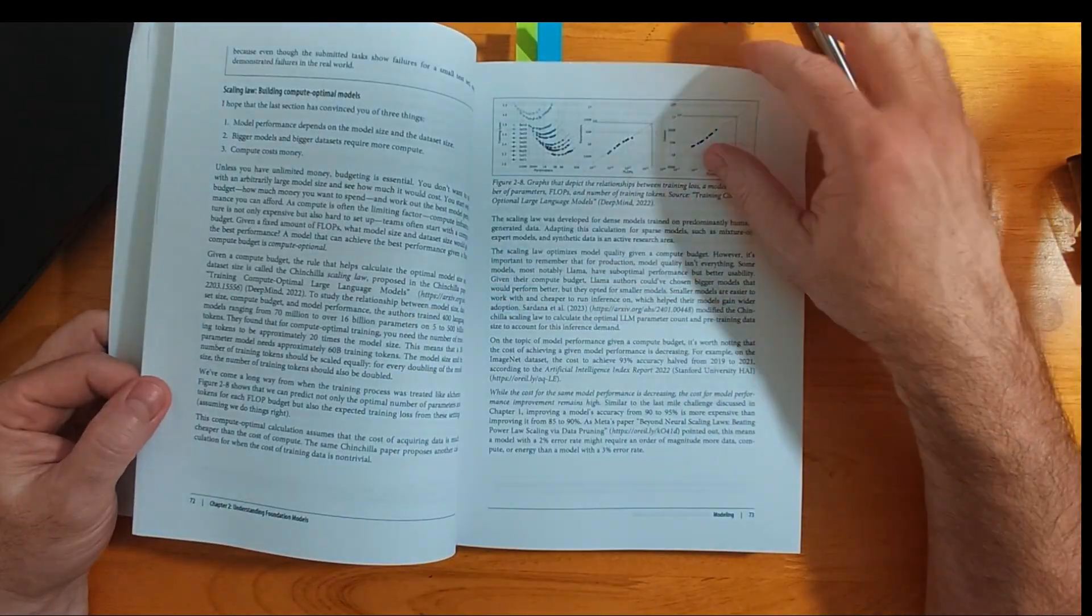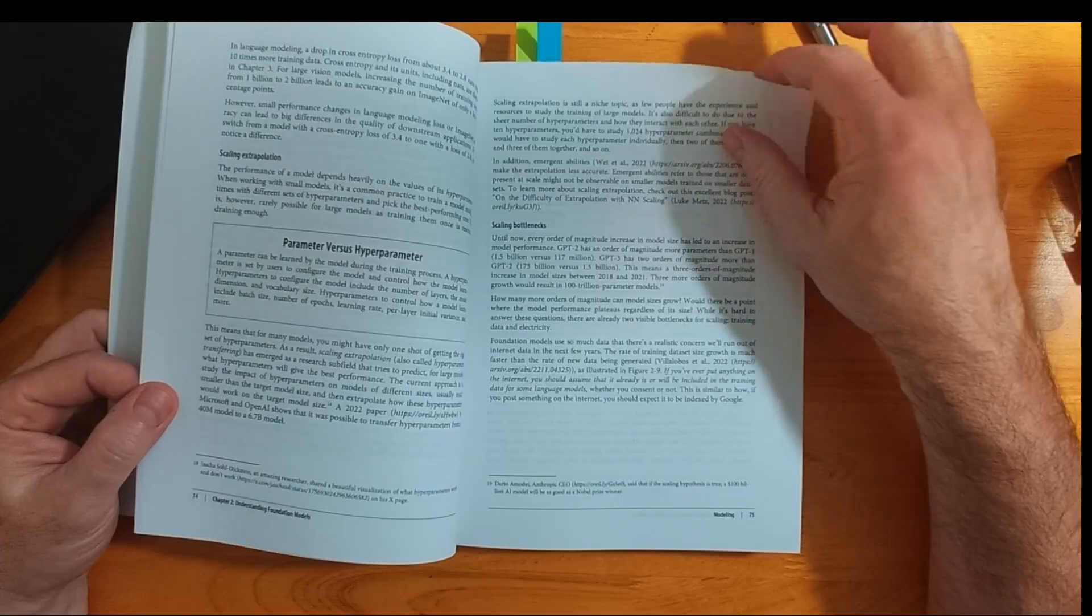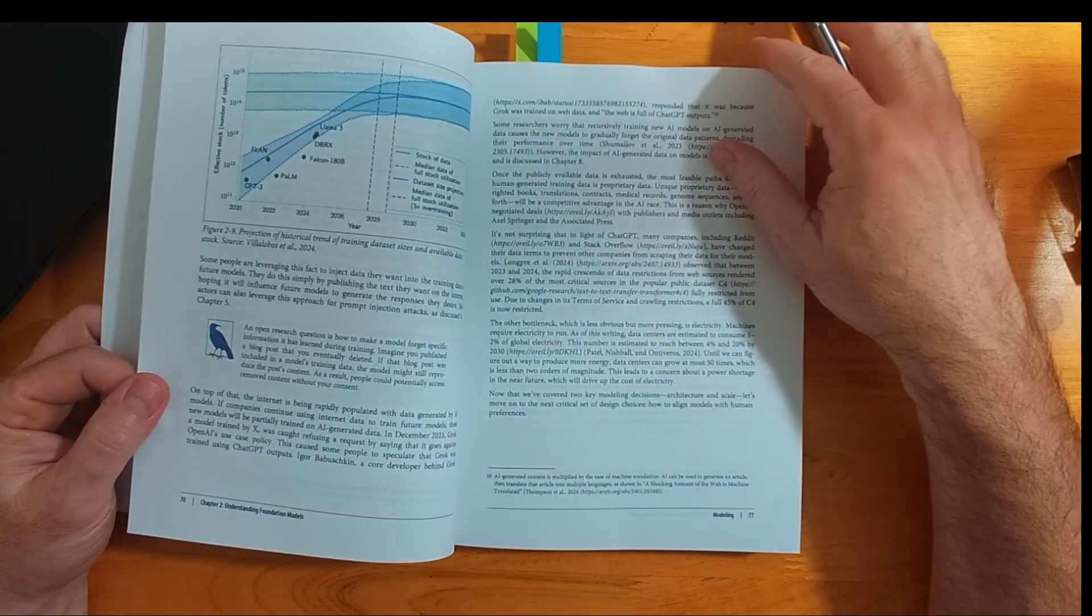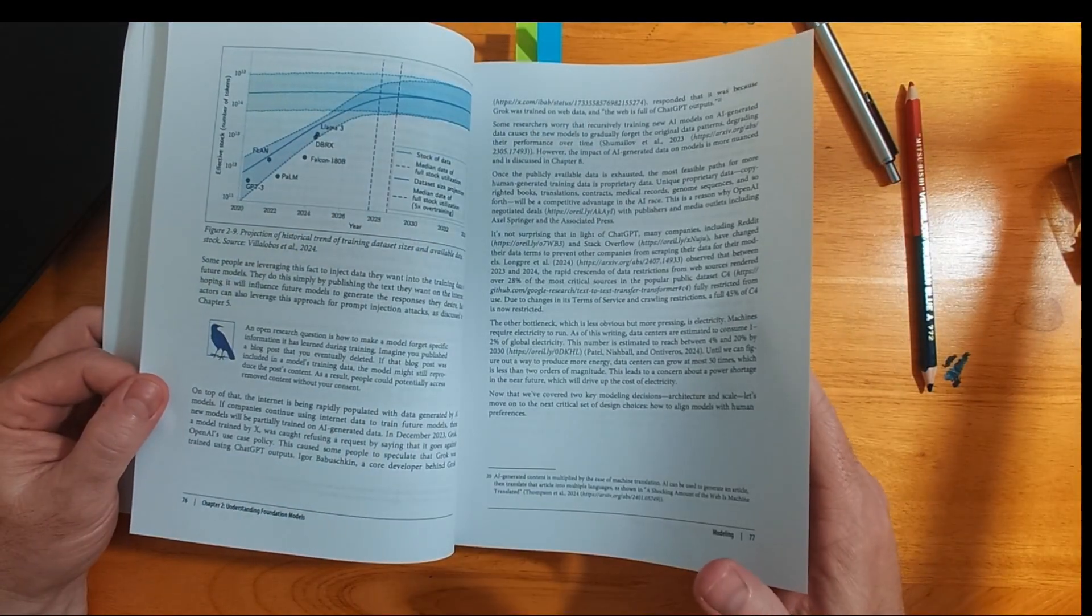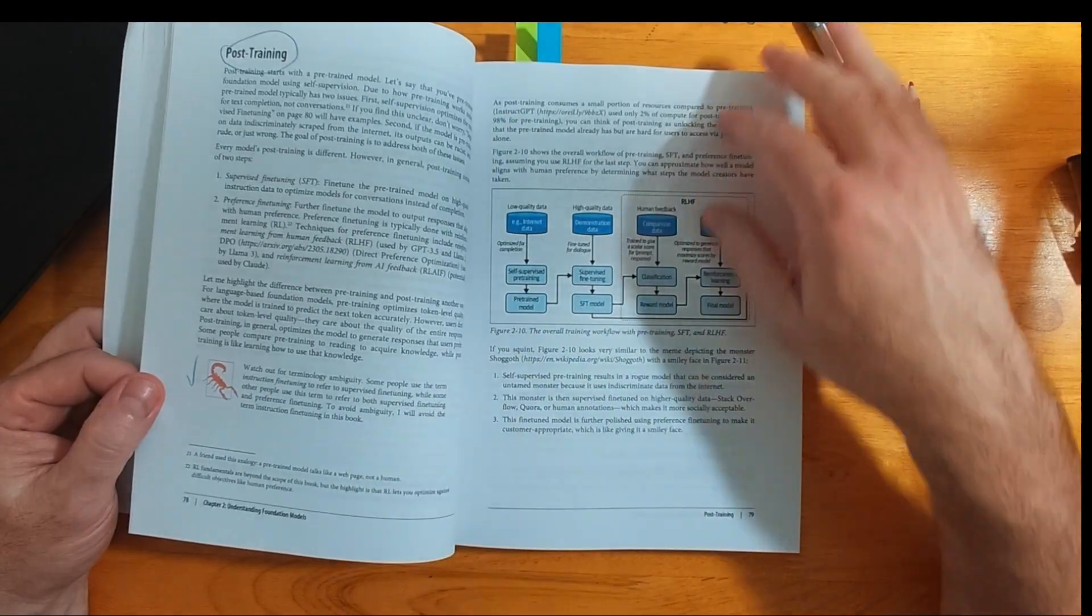Page 200 starts an important section of the book: Design your evaluation pipeline. Read closely. This topic could be an entire book in itself.